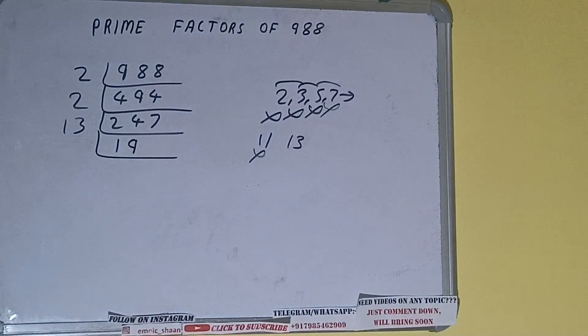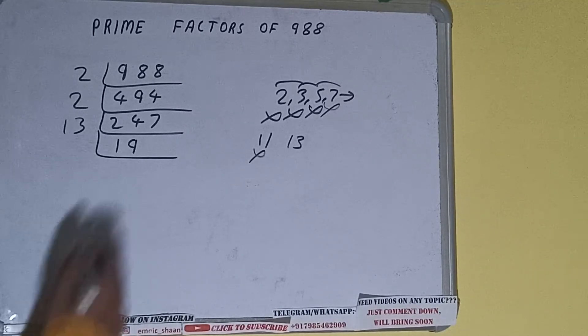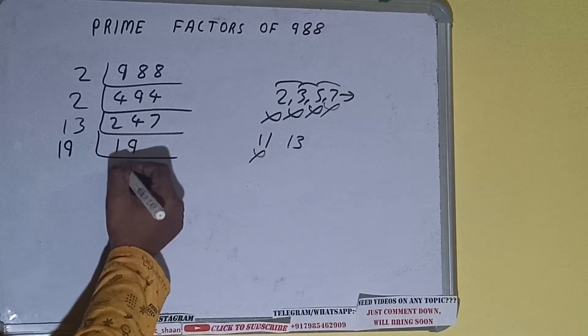We'll be having 19, and 19 is further not divisible by 13. 19 is also a prime number, so it is only divisible by itself, that is 19.